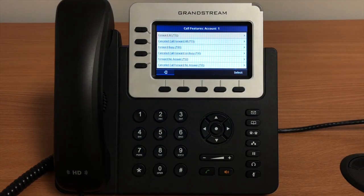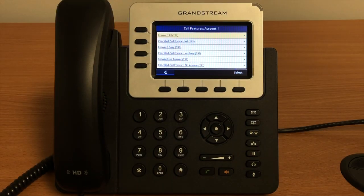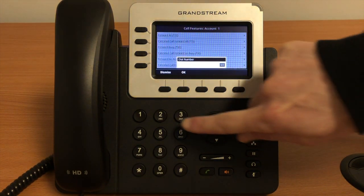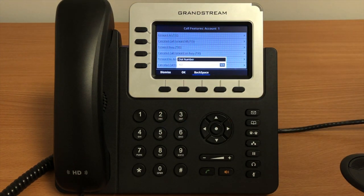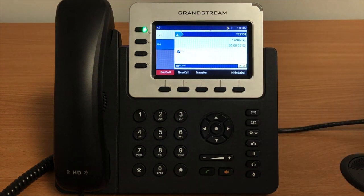You have three different call forward options: Forward All, which will forward all calls to the destination you enter; Forward Busy, which will only forward calls when you are using your phone; and Forward No Answer, which will forward calls after ringing your phone for 20 seconds. To select one of these options, use the arrow keys and press the center button to select. Dial the number you would like to forward to — this can be a 10-digit cell phone number or another extension — then press OK. The phone will announce the call forward rule.